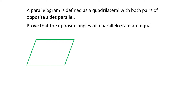Let's look at this problem together. It says a parallelogram is defined as a quadrilateral with both pairs of opposite sides parallel. You might have learned further information about a parallelogram — for example, that the opposite sides are equal — but in this question we're just going to use the definition they've given us. Then it says: prove that the opposite angles of a parallelogram are equal.